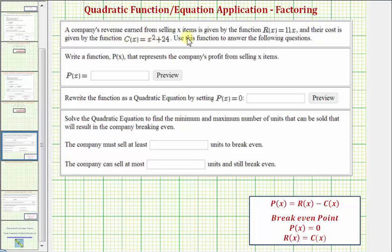A company's revenue earned from selling x items is given by the function R(x) = 11x, and their cost is given by the function C(x) = x² + 24.